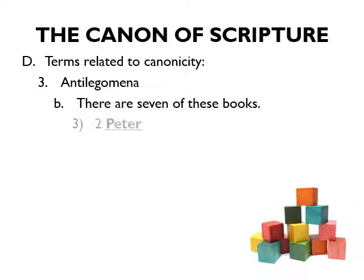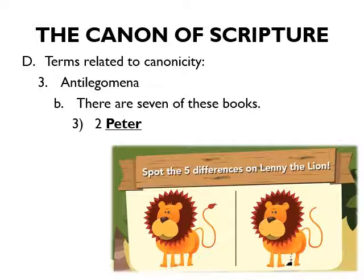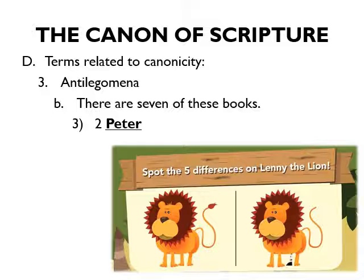The third disputed book is 2 Peter, which was actually disputed more than any other New Testament book because of its dissimilarities with 1 Peter, and because some believed it might have been written after Peter's death. However, when they studied 1 Peter compared to 2 Peter, the similarities far outweighed the dissimilarities. Origen, Eusebius, Rome, and Augustine all concluded it should be kept in because of its strong similarity to 1 Peter.